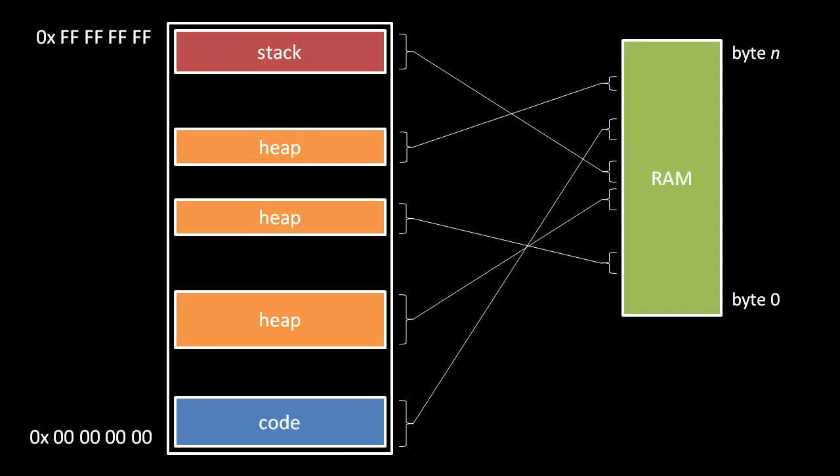So, in fact, a more realistic diagram would show that the stack, heap, and code portions of a process address space are most likely not mapped as whole units. For example, each page of the stack may be mapped to different, non-adjacent pages of RAM, and in no particular order.